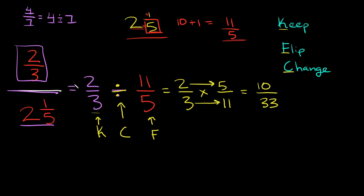So our original problem, two over three divided by two and one-fifth, is equal to ten over thirty-three. Now let's put the mixed number on top and the fraction on the bottom.